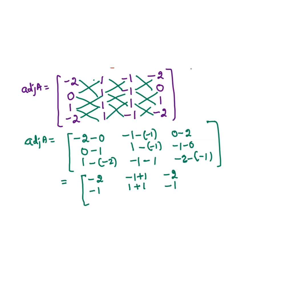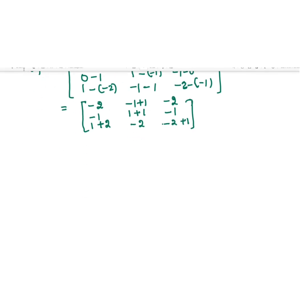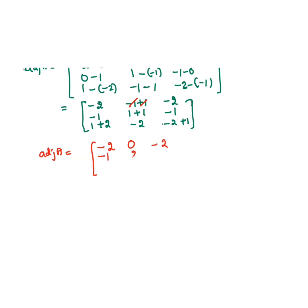Minus 1 into 0 is minus 1, minus into minus is plus 2, minus 1, minus 1 is minus 2, and minus 1 so the adjoint of A will be: minus and plus get cancelled giving 0, minus 2, minus 1, 1 plus 1 is 2, minus 1, 1 plus 2 is 3, minus 2. Whenever you get a bigger number sign with 1 plus 1 minus, do subtraction: 2 minus 1 will be 1, bigger number sign gives minus 1. So the answer is: adjoint of A = [[-2, 0, -2],[-1, 2, -1],[3, -2, -1]].